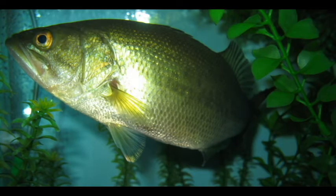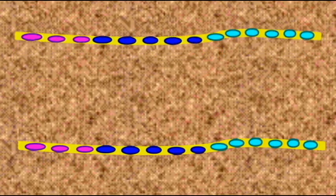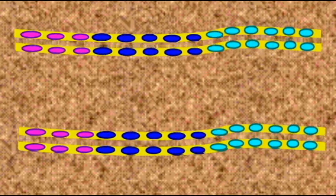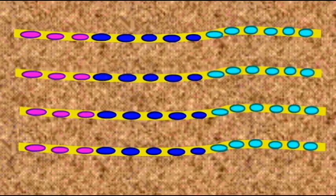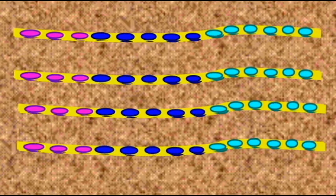While the first bony fish have four hox clusters, as do most vertebrates, it seems before the evolution of the teleost fish, the group of bony fish which make up most fish alive today, there was yet another genome duplication.